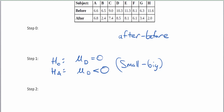Let's do our subtraction carefully. After minus before: the first one is positive 0.2, the next is negative 4.1, then negative 1.6, negative 1.8, negative 3.2. You can see that most of the values are negative, so we're definitely going to have a left tail here. The next one is 6.1 minus 8.1, which gives negative 2.